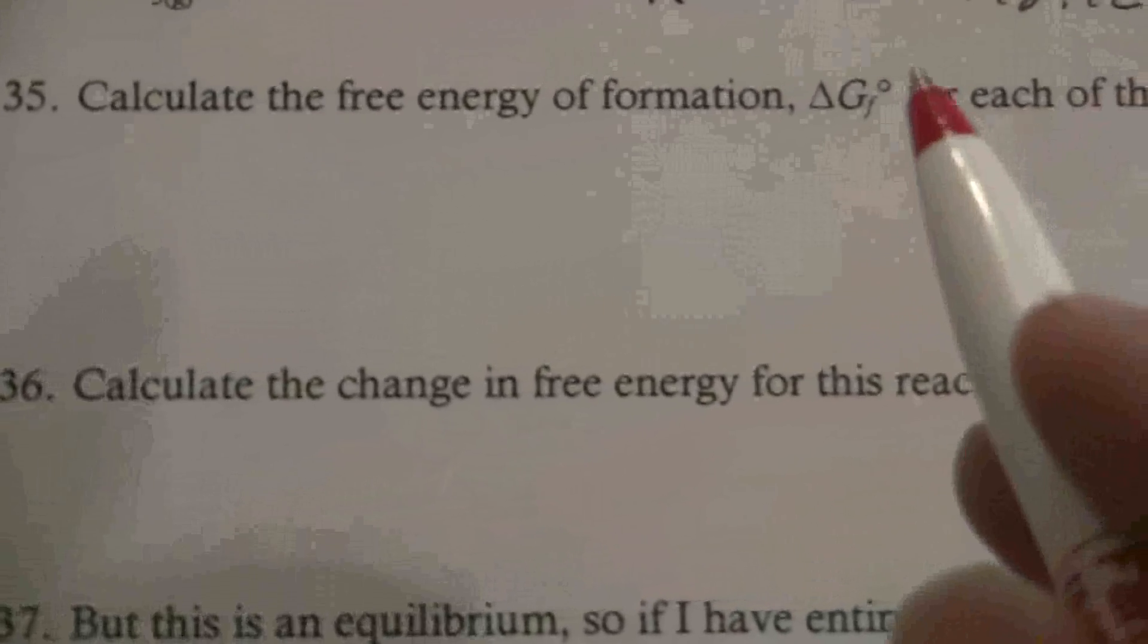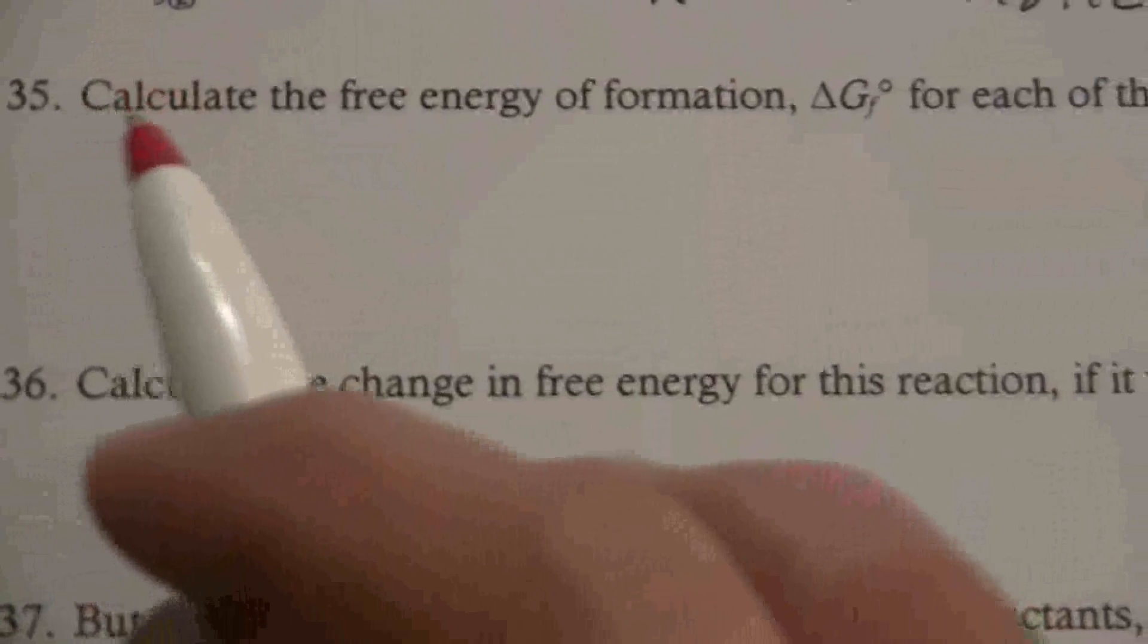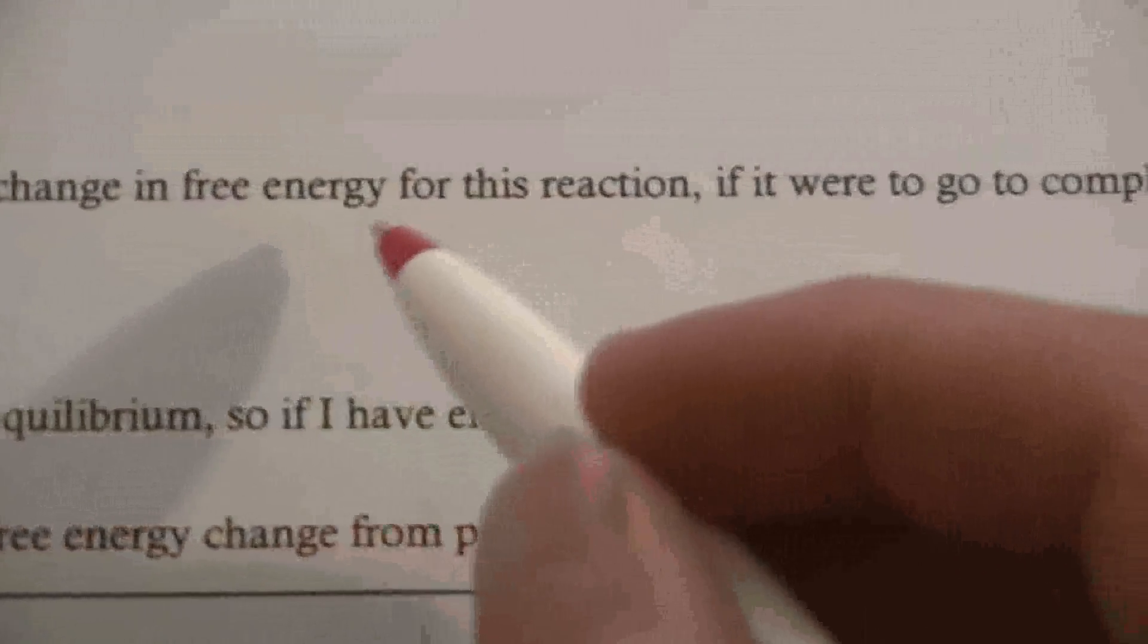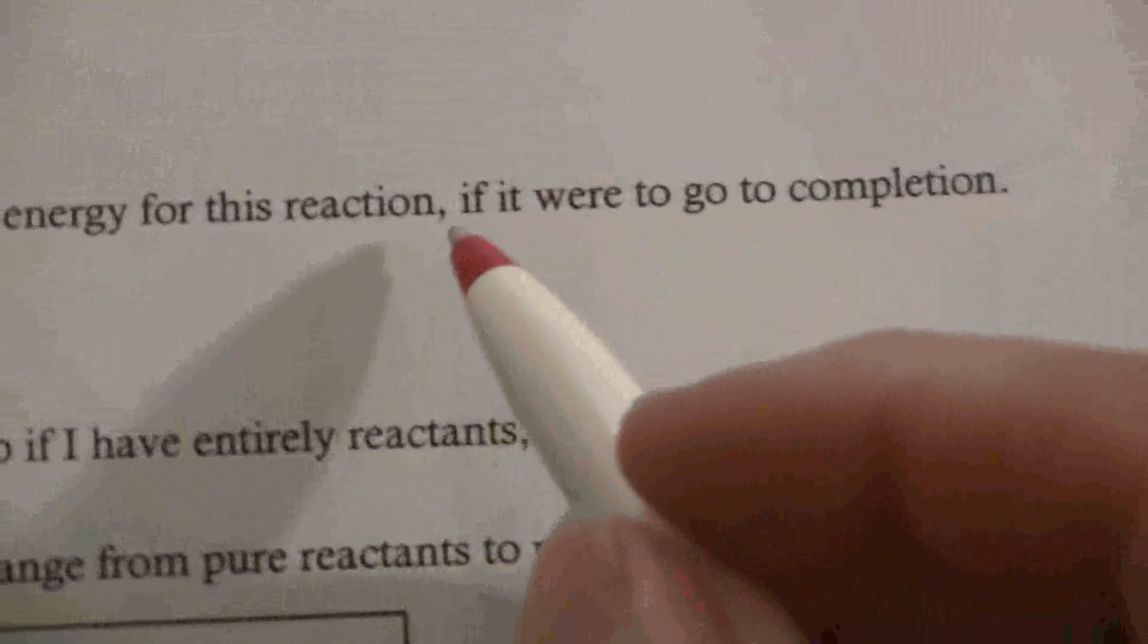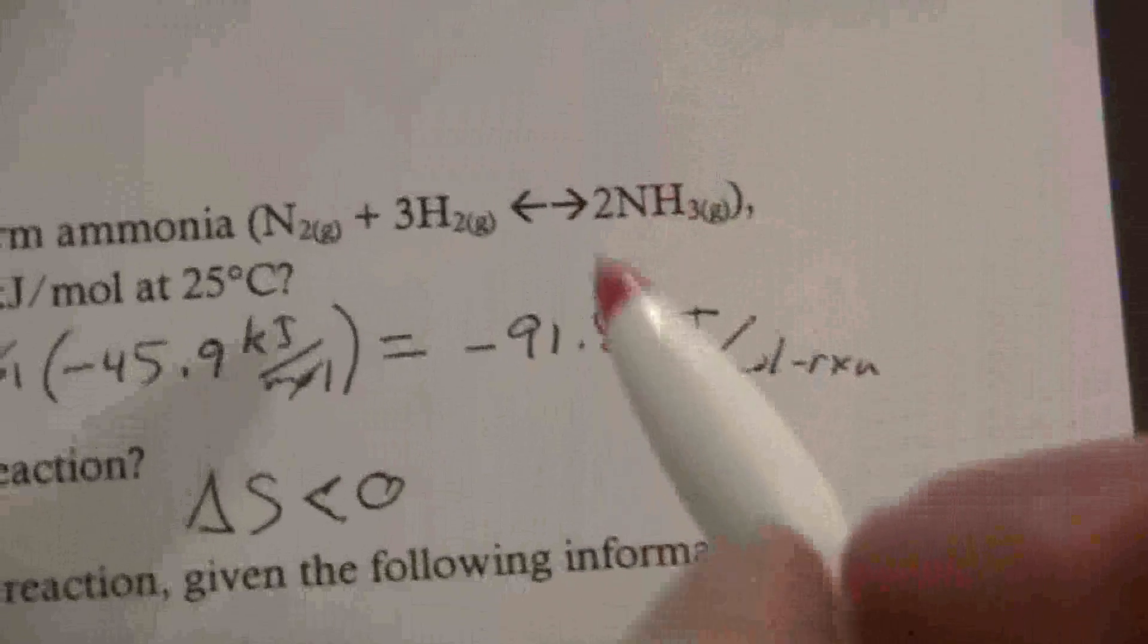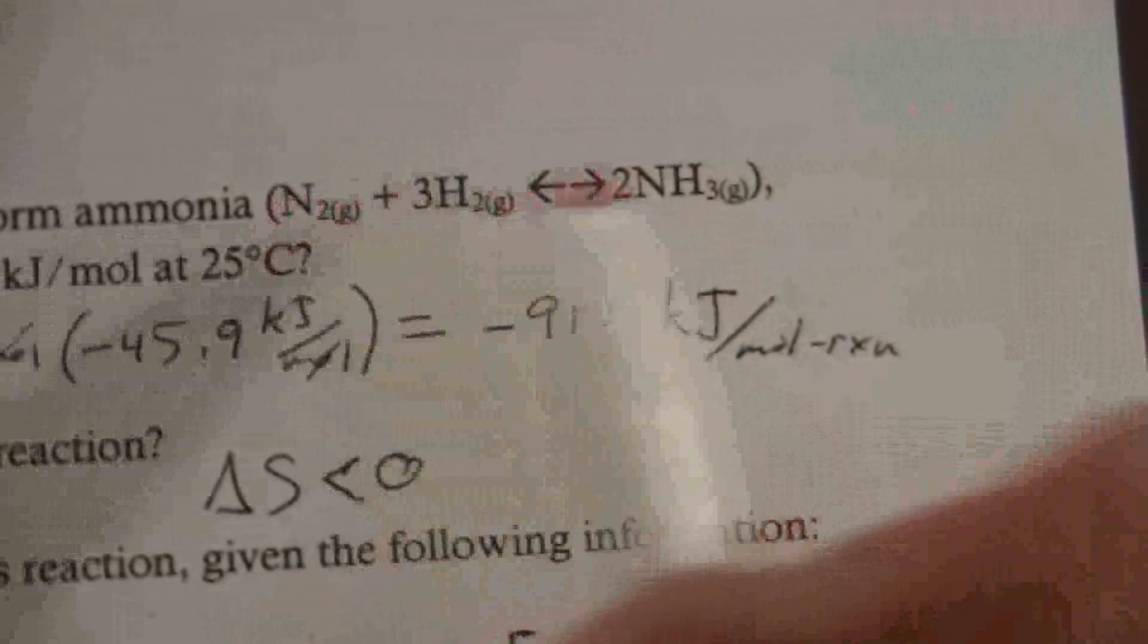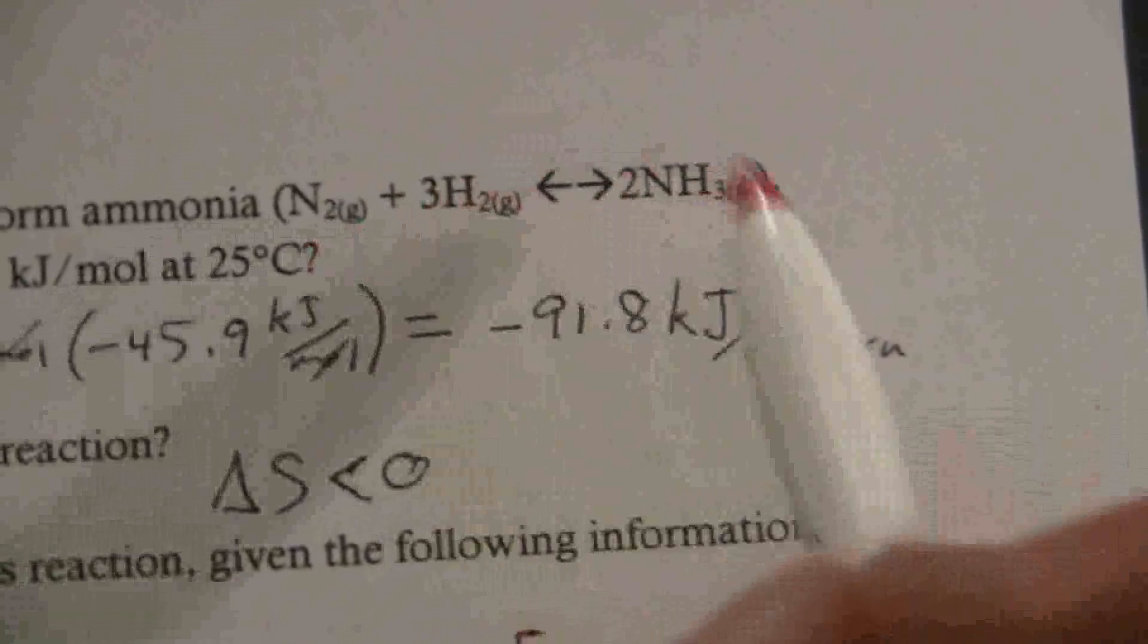So let's find the delta G for the reaction. And I'm actually going to skip this question and move down to here, and then we'll come back to that. Alright, so calculate the change in free energy, that's the delta G for this reaction, assuming that it goes to completion. I just say that because it's an equilibrium going both ways. So we're just going to look at it for now as though it goes completely to producing the ammonia.